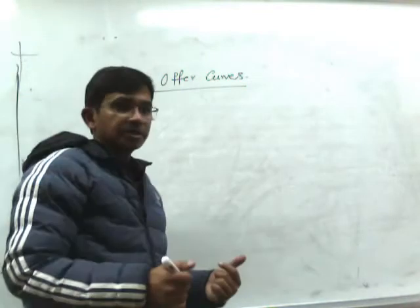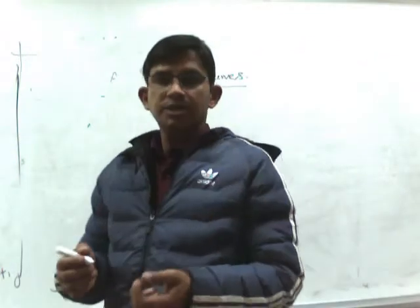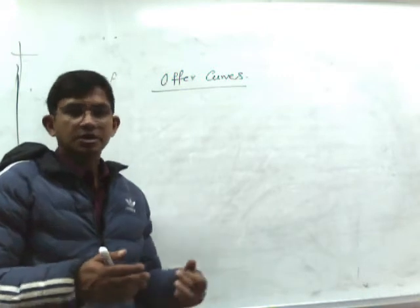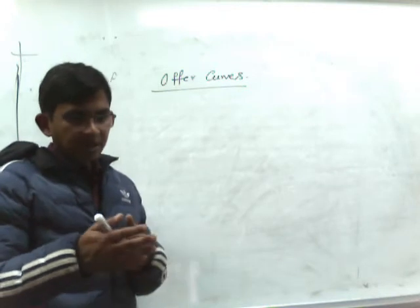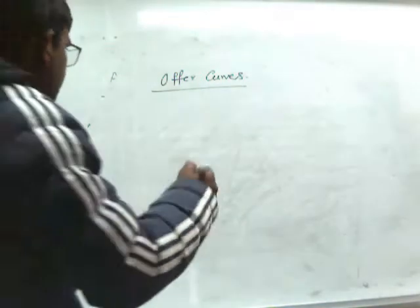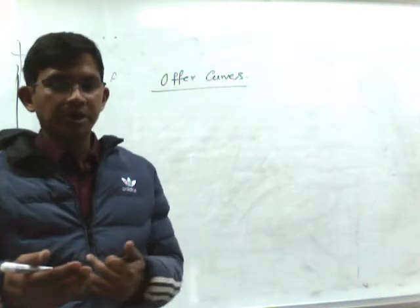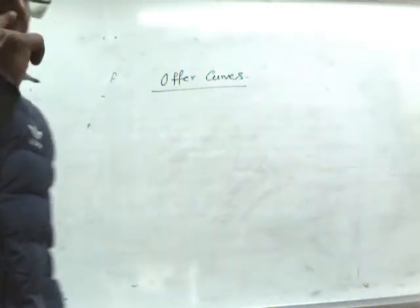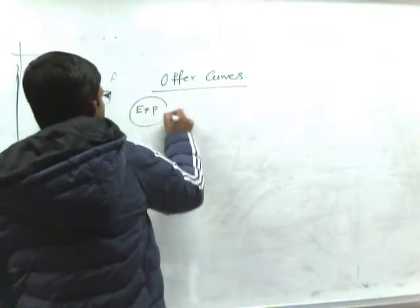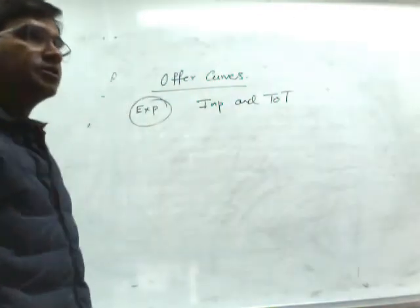The offer curve is a very important tool in neoclassical trade theory. The offer curve represents the reciprocal demand and supply of a country — on one hand it explains the supply of exports, and on the other hand it explains the demand for imports. So if there is a particular terms of trade, the offer curve will show how the country will respond. It shows the relationship between three things: exports, imports, and the terms of trade.